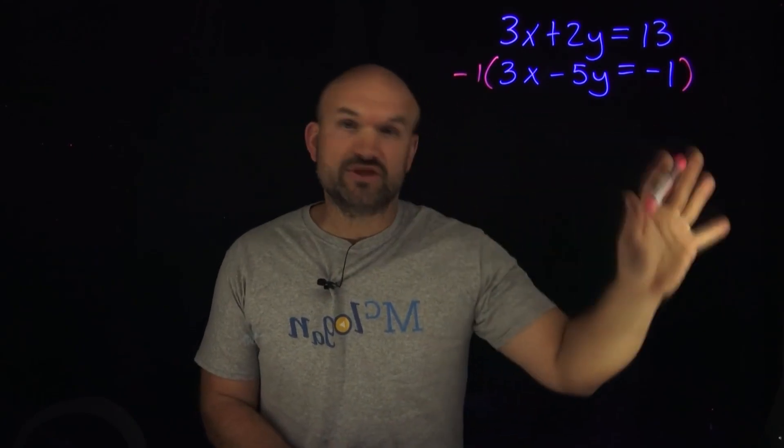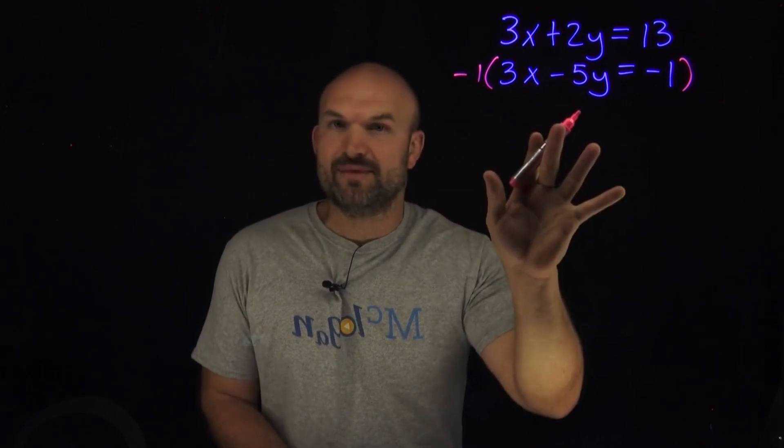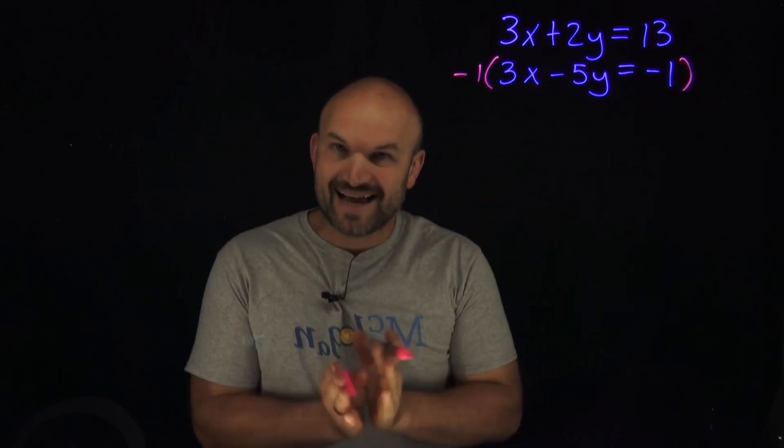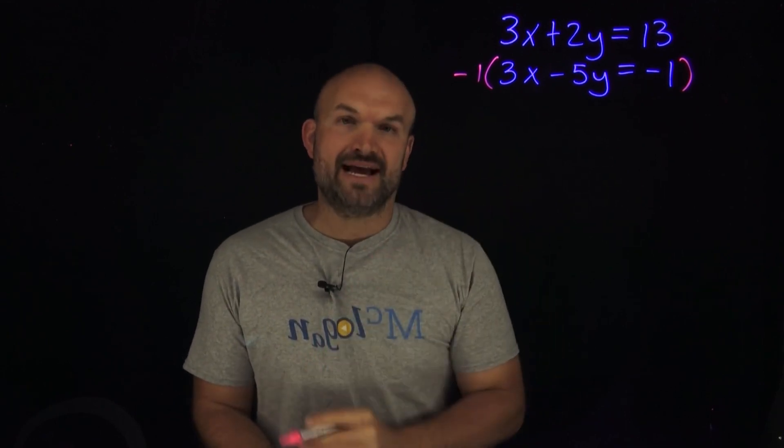Now you can see what I did is I only multiplied by negative one because the nice thing here is this was already a 3, so if I just multiply by negative one then that's going to give me a negative 3. Again, that is our goal: to get the exact same coefficient, one positive and one negative.